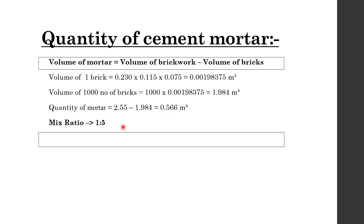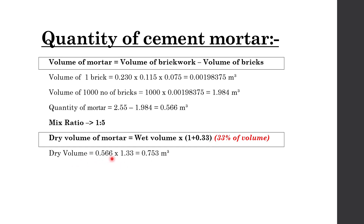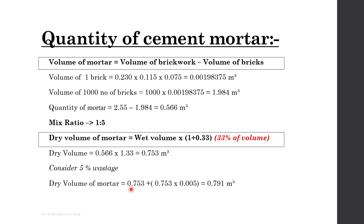Let's assume the mix ratio of cement mortar as 1 is to 5. To get the dry volume of mortar, we have to multiply the wet volume by 1.33, which means dry mortar is 33% greater in volume than wet mortar. Therefore, dry volume equals 0.566 multiplied by 1.33, which equals 0.753 cubic meter. On site there will be some wastage, so let's consider 5% wastage. Therefore, dry volume of mortar equals 0.753 plus 5% of 0.753, giving 0.791 cubic meter.